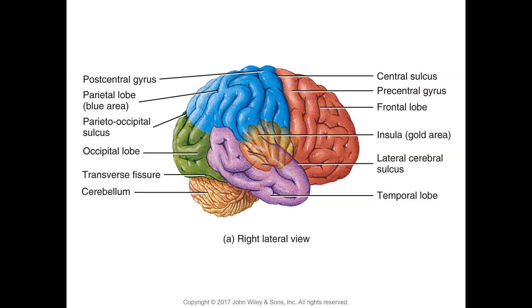The transverse fissure separates the occipital lobe from the cerebellum. The gyrus anterior to the central sulcus is the pre-central gyrus, and the one posterior to it is the post-central gyrus. The longitudinal fissure separates the two cerebral hemispheres and is more visible in a frontal section.